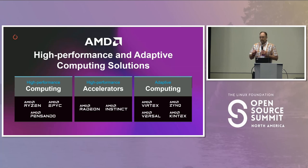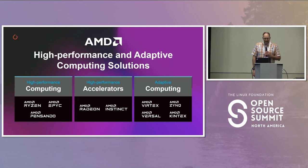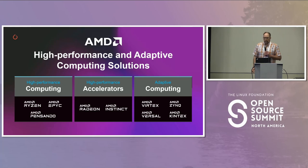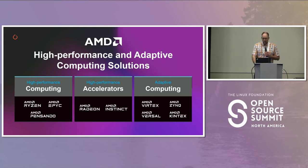In terms of architecture naming: on the CPU side we call it Zen (Z-E-N). On the accelerator side, Radeon uses RDNA and Instinct uses CDNA — the "C" standing for compute versus graphics, reflecting different optimization properties. On the adaptive computing side it's called XDNA. We'll see these names come up through a couple of the other slides.